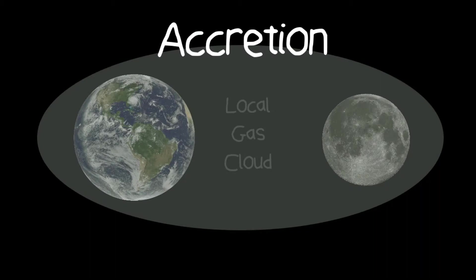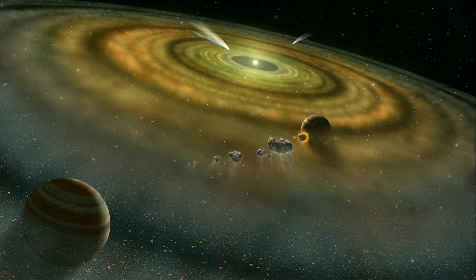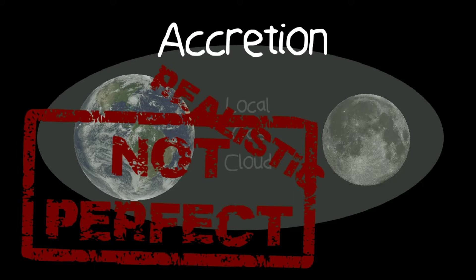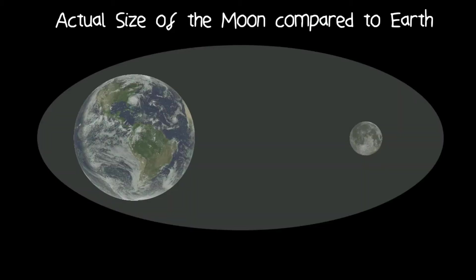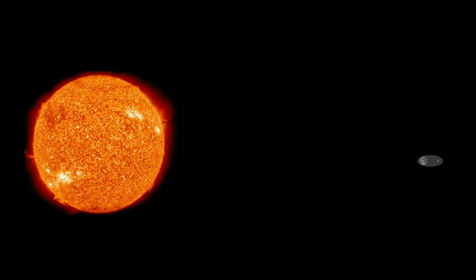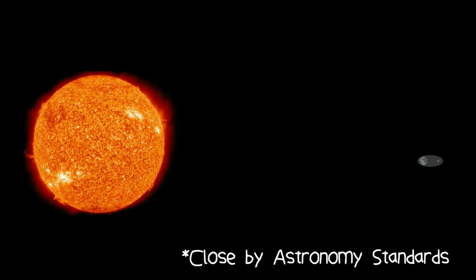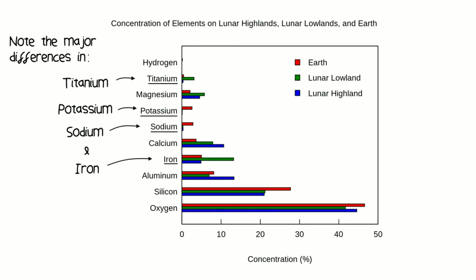While this idea for lunar origins seems like a fairly realistic proposal — after all, it's where the solar system came from — it's far from perfect. For example, if both the Earth and Moon came from the same accretion disk, they would be similar in size, and in case you hadn't noticed, they aren't. Plus, if they formed from the same accretion disk in such close proximity to each other, why are they made up of very different materials?